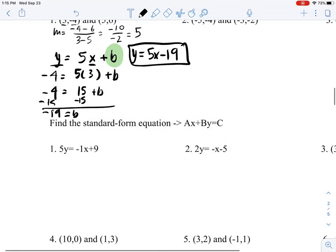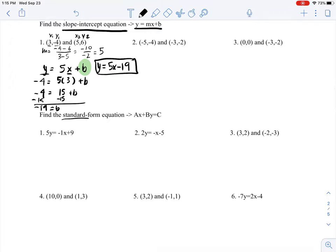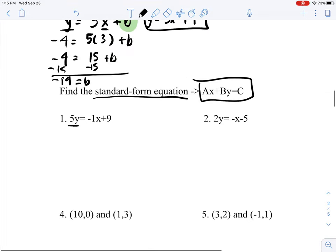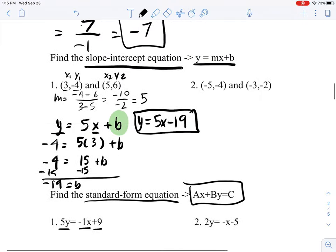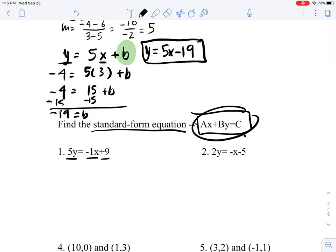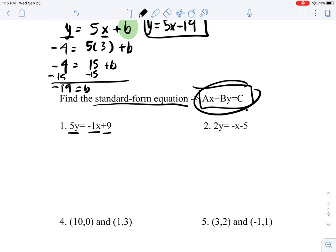Moving on. Find the standard form equation: Ax plus By equals C. We have an equation, 5y equals negative 1x plus 9. This form of the equation is actually in the slope-intercept form, not the standard form.